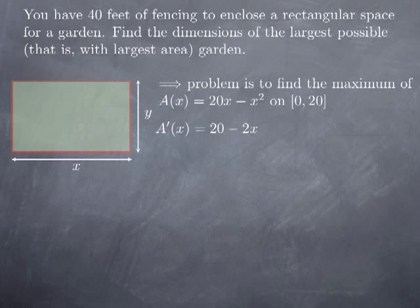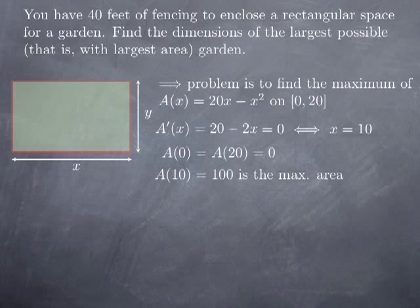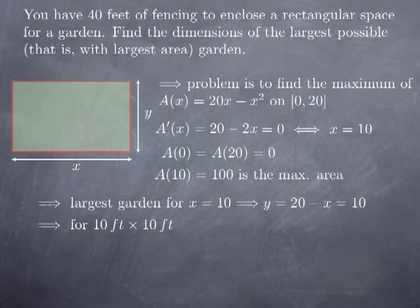To find the critical numbers, I differentiate the function and get 20 minus 2x. The derivative is 0 exactly when x is 10, which is a point in the interval. At the endpoints, when one dimension is 0 or 20, the area is 0. At x = 10, the area is 10 by 10, so 100 — this is the maximal area. We obtain this when x is 10, in which case y is 20 minus 10 = 10. So as expected, we get the largest garden for a 10 by 10 square.